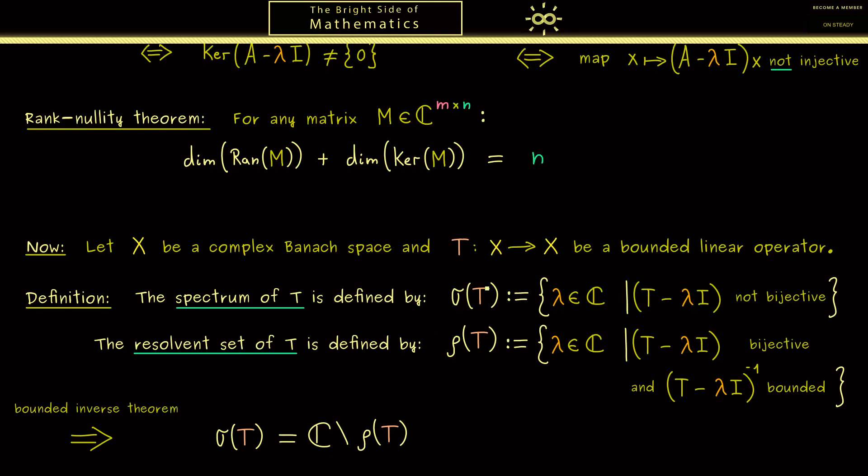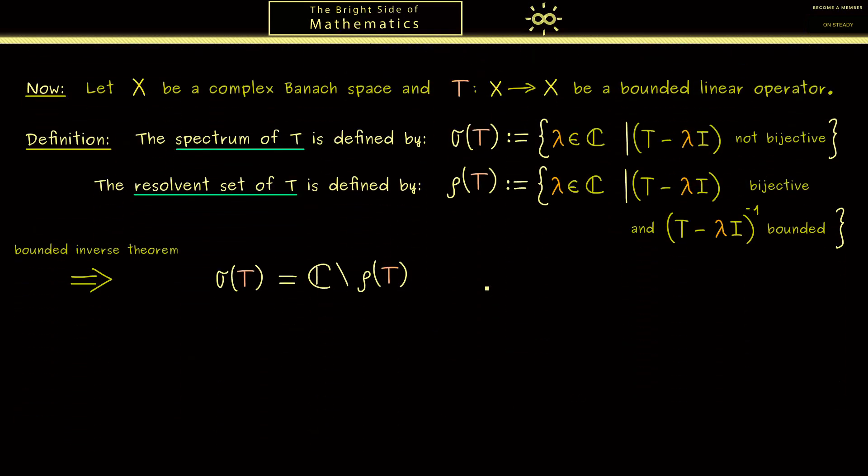Knowing all this, I can show you now how we can split up the set σ(T). The first one is the so-called point spectrum of T. Indeed this is the only set we have for the finite-dimensional case. However, in the infinite-dimensional case we also have a set we call the continuous spectrum and a set we call the residual spectrum.